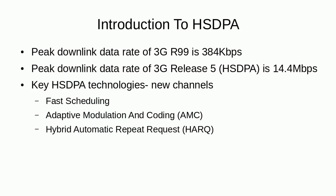In third generation Release R99, the maximum data rate that a user equipment could experience was 384 kbps. But in the case of 3rd generation Release 5, which is also known as HSDPA, the downlink data rate of a single user can be increased up to 14.4 Mbps.